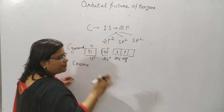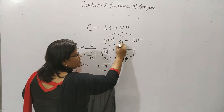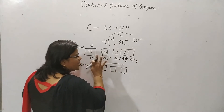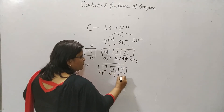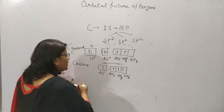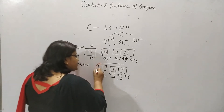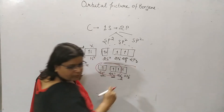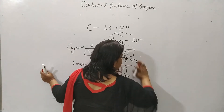In the hybridization, the 1s2 plays no role. In the excited state, the 2s2 orbital will have one electron jump to the 2pz orbital. So the excited state configuration becomes 2s1, 2px1, 2py1, and 2pz1. The 2s1, 2px1, and 2py1 — these 3 orbitals intermix and form 3 new sp2 hybridized orbitals.